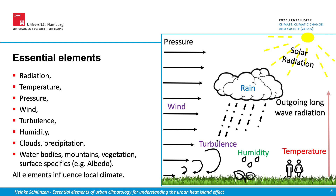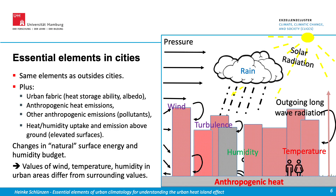All these elements influence the local climate. When we come to cities, we find the same elements relevant for the local climate as outside, but we have more influences. There is the urban fabric with its very high heat storage ability and low albedo values. We have a completely new heat source: the anthropogenic heat emissions resulting from human activities within urban areas. And we have further anthropogenic emissions like gases and particles emitted into the atmosphere, which change the radiation budget and can also impact cloud formation.